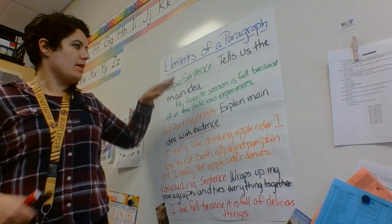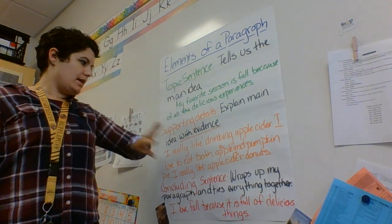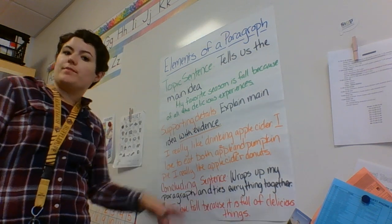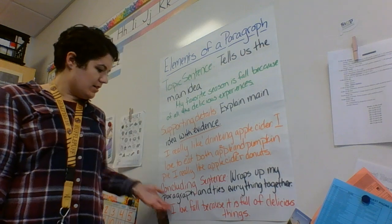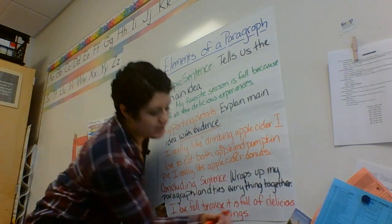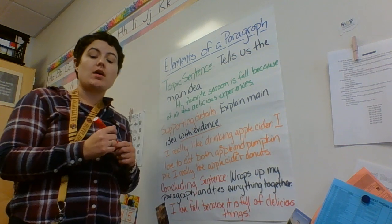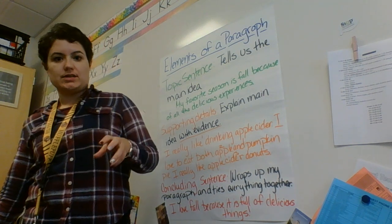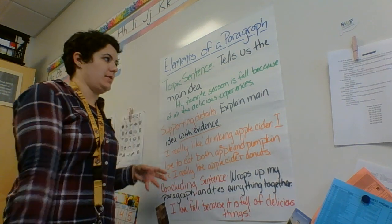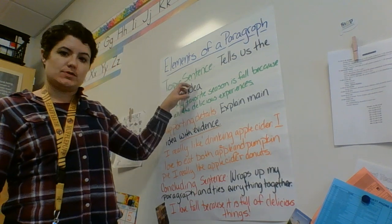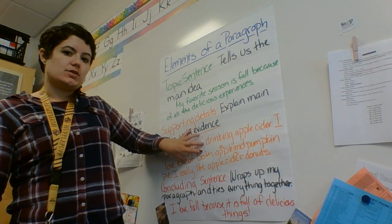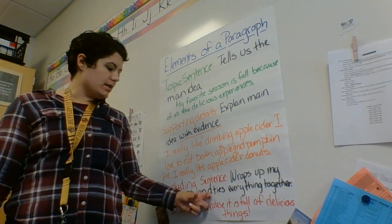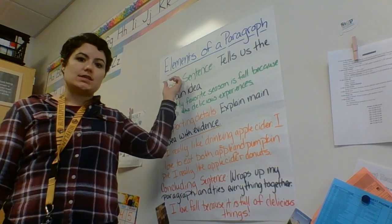So I started out with my topic sentence — I told you my main idea. I explained my main idea with three pieces of evidence. And then I tied everything together in an exciting way by telling you that I love fall because it's full of delicious things. So when I ask you to write a paragraph, I'm looking for somewhere between four and six or seven sentences. I want to see a topic sentence that tells me your main idea, supporting details that give me good evidence, and then a concluding sentence that wraps everything up and restates the main idea.